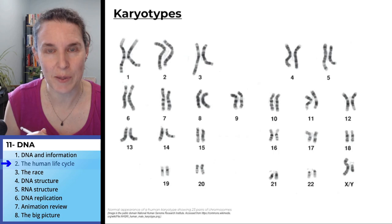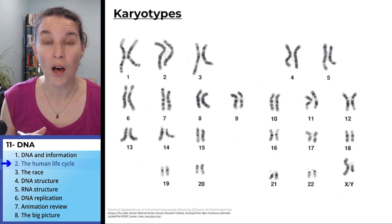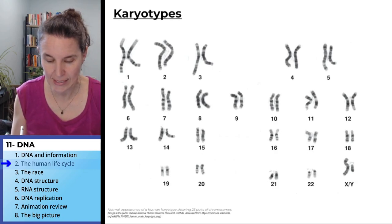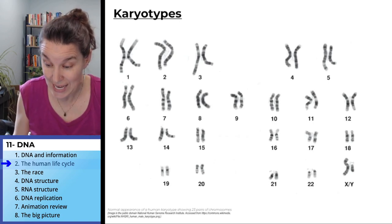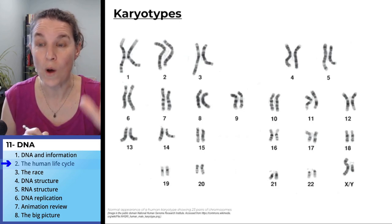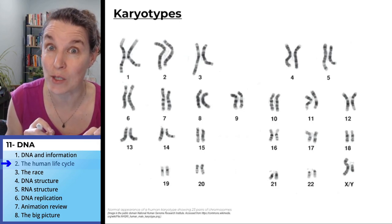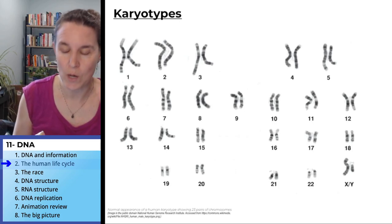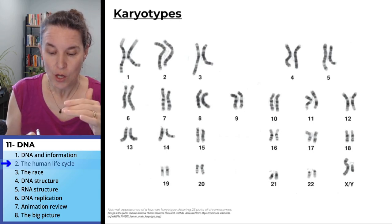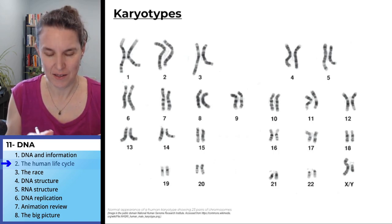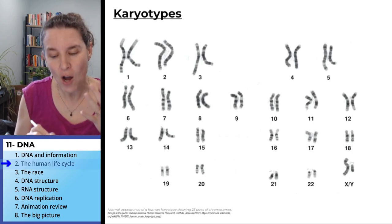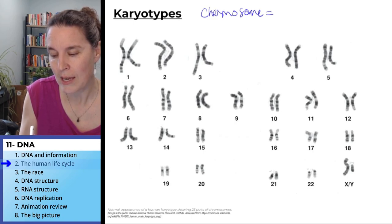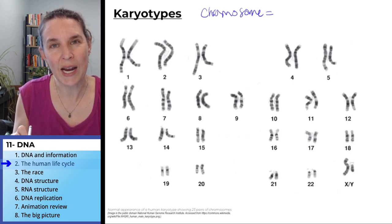This is called a karyotype. And this is a picture of all the chromosomes in your giddy up. We have 46 chromosomes total. And this is a human karyotype. And you can see, our chromosomes are numbered from 1 to 22. And then we have these sex chromosomes, an X and a Y, or two X's. Not two Y's. We can't survive with two Y's. We have to have at least one X. They're sorted by size. So chromosome number one is the biggest. And all it is, a chromosome is one strand of DNA.